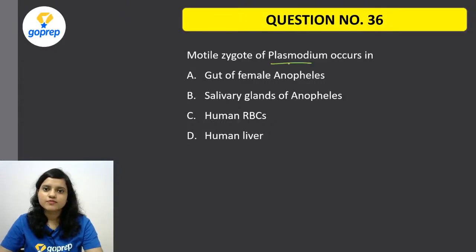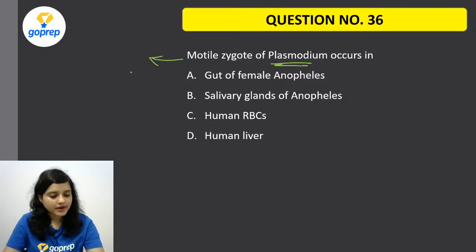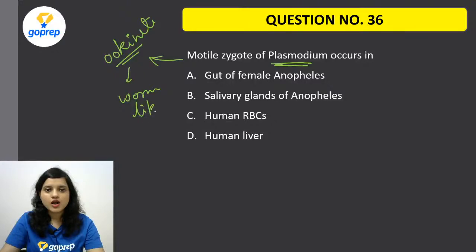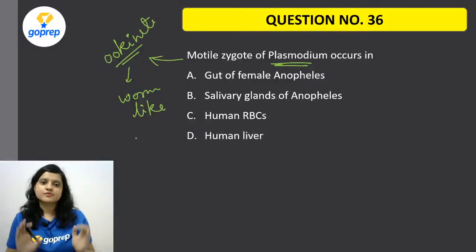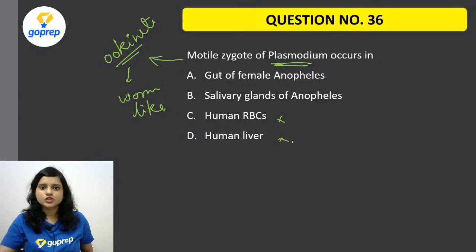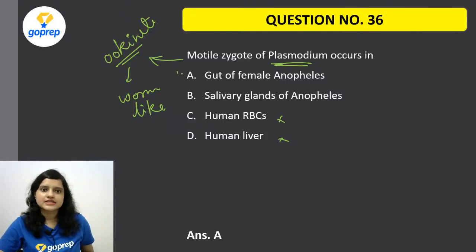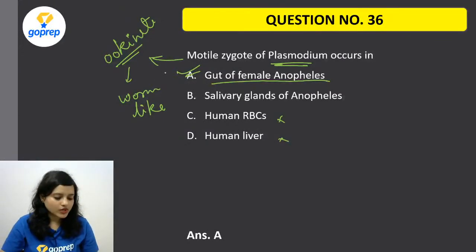Question number 36: Motile zygote of Plasmodium occurs in? If you have studied the Plasmodium life cycle, the motile zygote is called ookinete, which is worm-like. Obviously fertilization and the ookinete occur inside the Anopheles mosquito. The correct option is A — it occurs in the gut of female Anopheles.